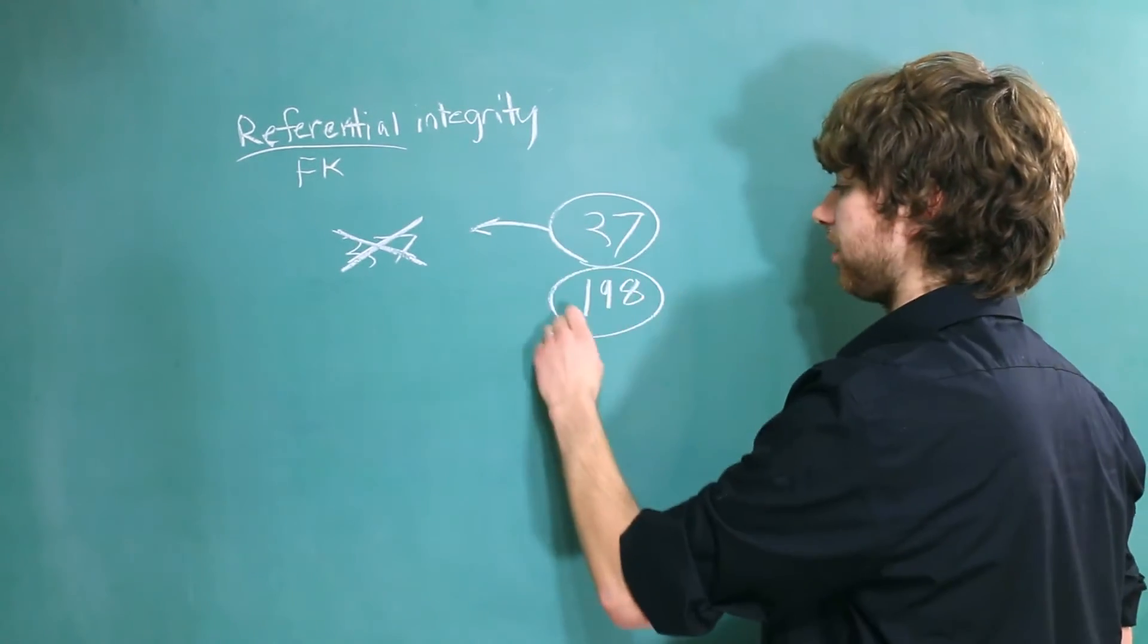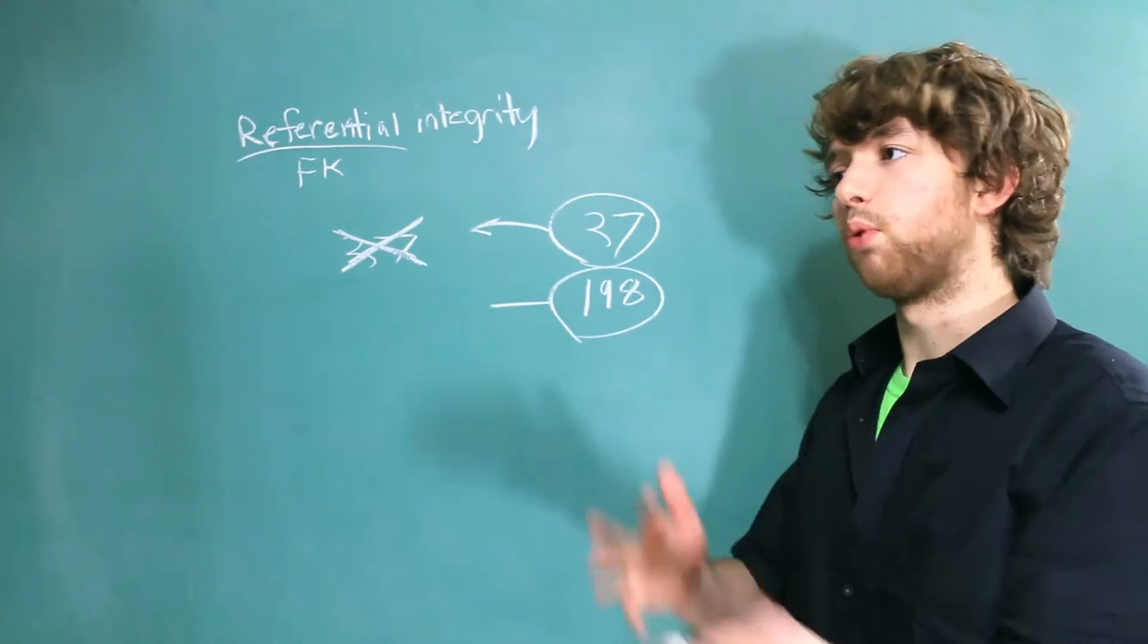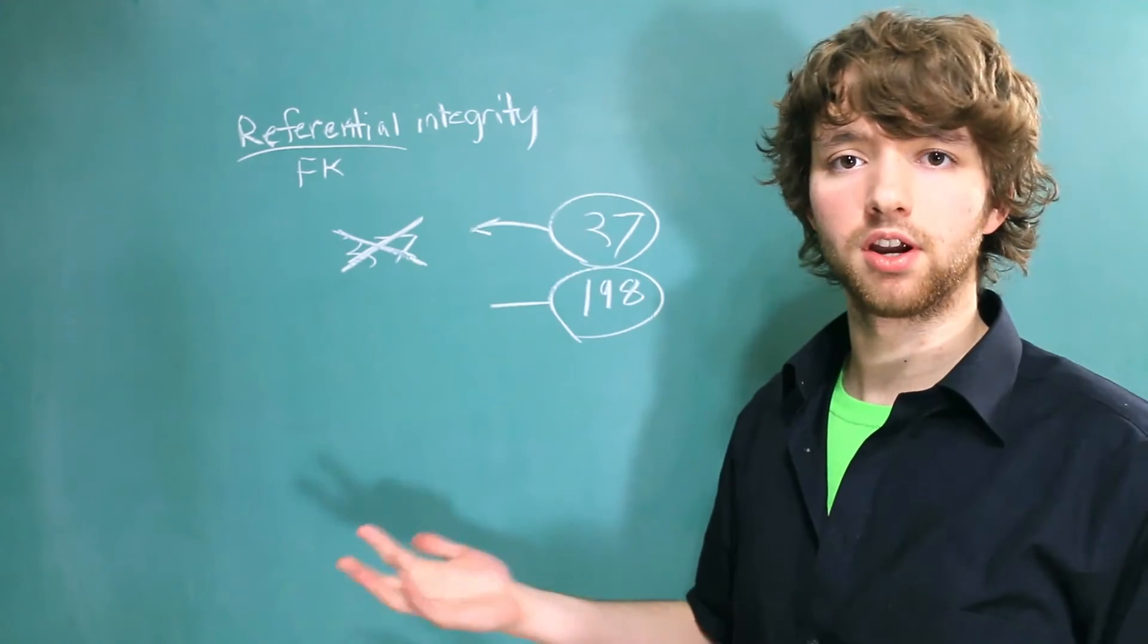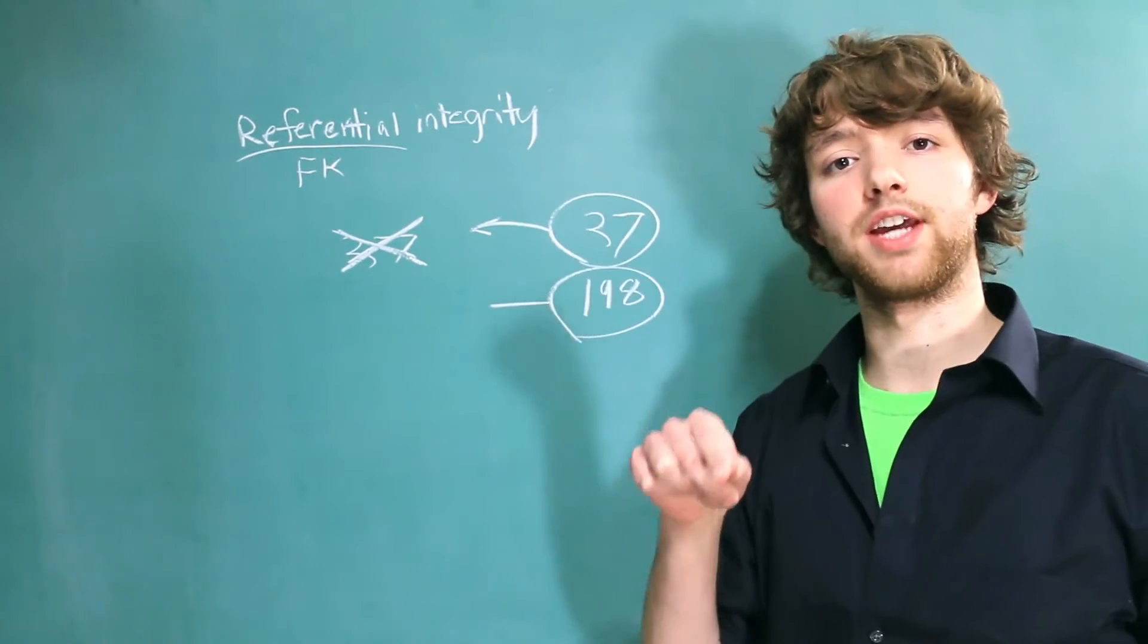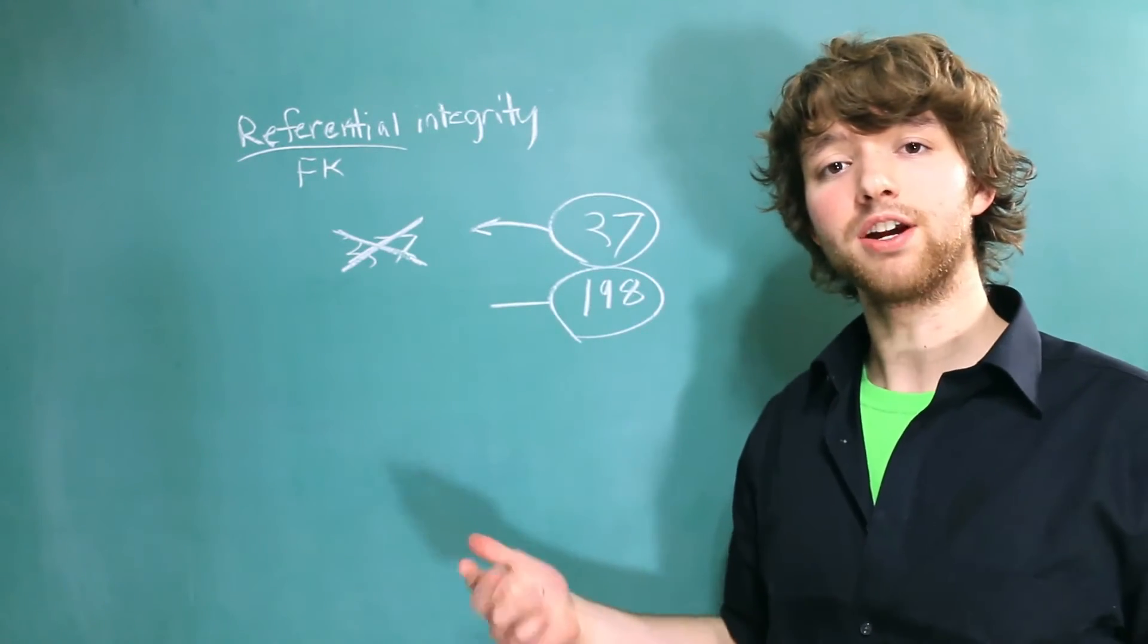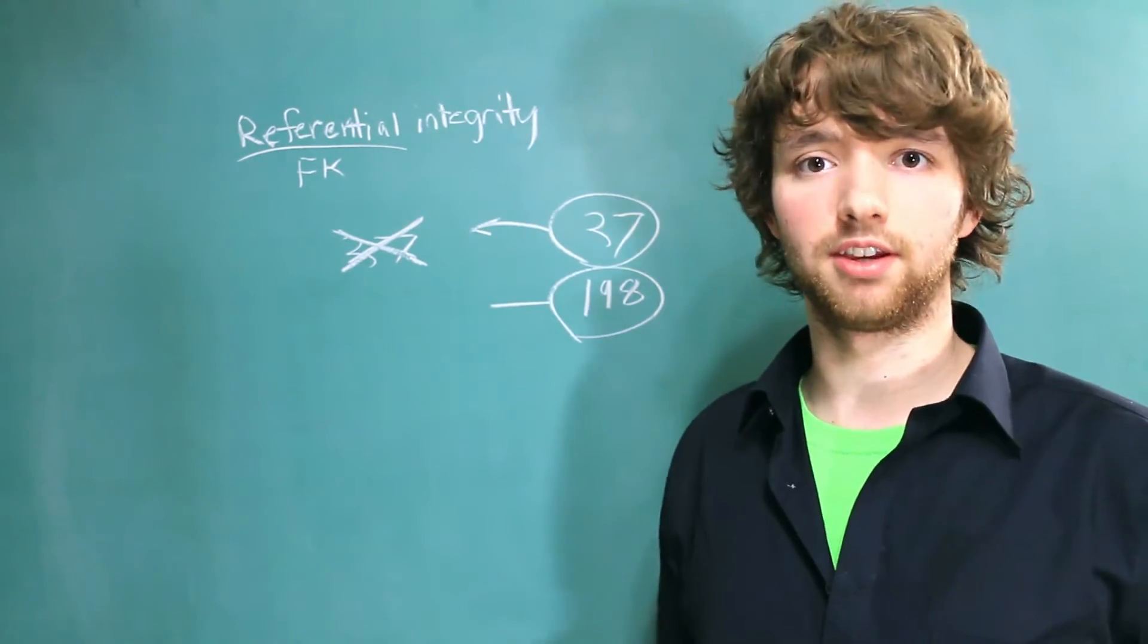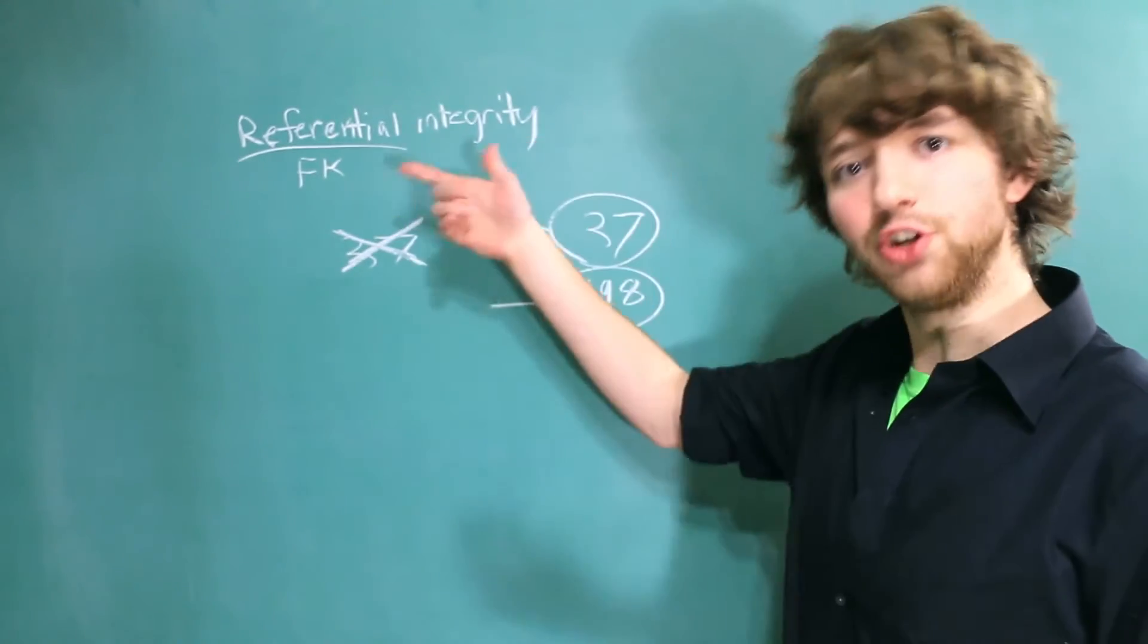For example, this one, it points nowhere. So how are we supposed to know which ones point somewhere and which ones don't point anywhere? That's what I'm talking about with integrity. If you don't have data integrity, you can't trust your own data. And if you can't trust your own data, your database is not worth anything. That might be a little harsh, but seriously. Get your data integrity.